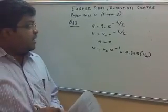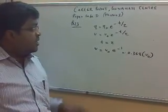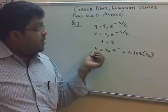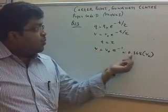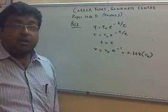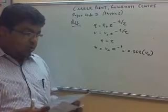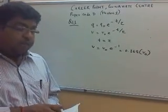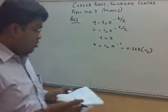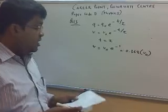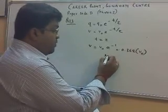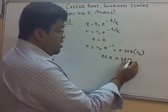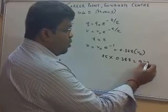That means in one time constant, the voltage decreases to 0.368 of the peak value. In this graph, the peak value is 25 volts. So at one time constant, the value is 25 times 0.368, which is somewhere around 9.2 volts.